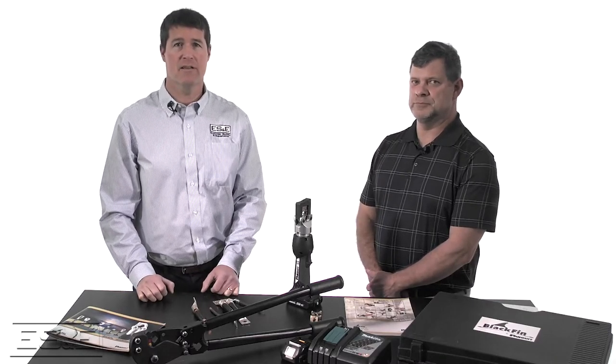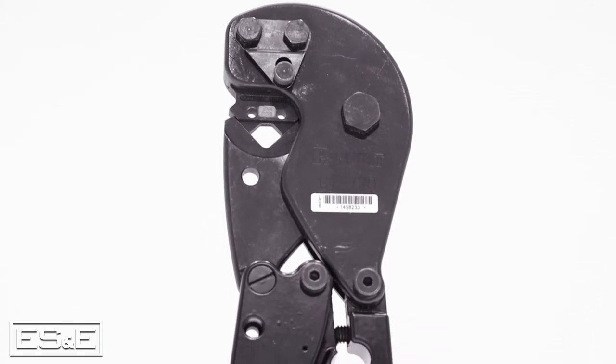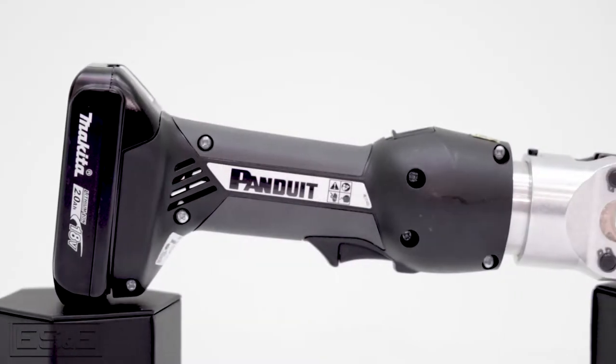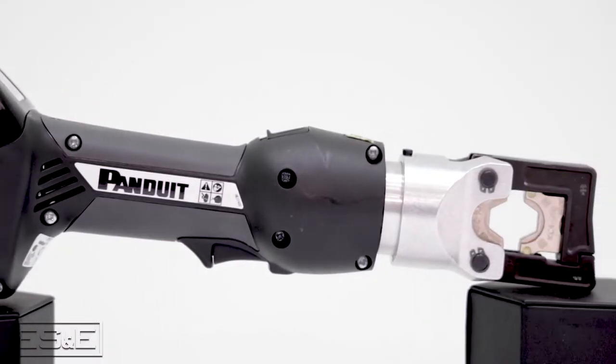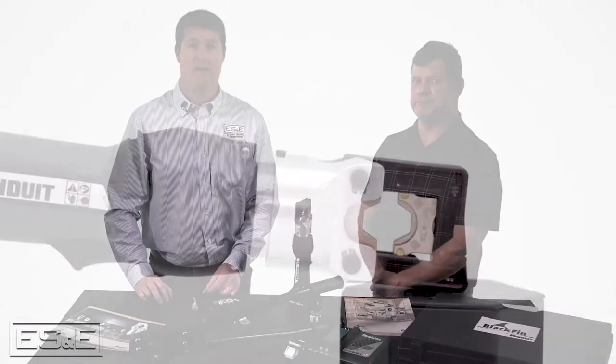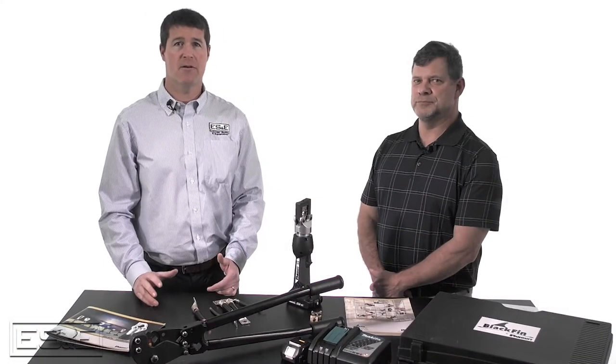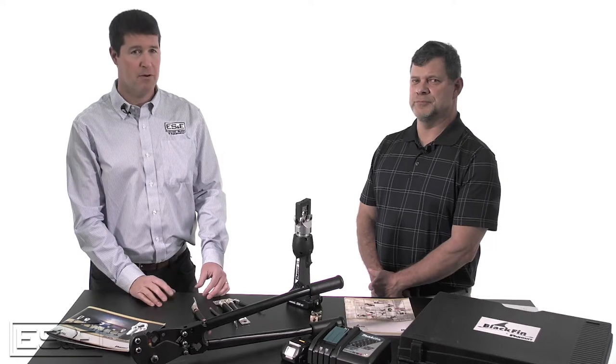First, we're going to look at the traditional crimping tool, the CT720, and then we're going to get to the battery-powered Blackfin CT2600. After seeing this video, we hope that you'll be able to understand the features and benefits of both crimpers.